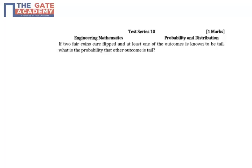At least one, note here, at least one is tail. What is the probability that the other outcome is tail? I mean, the other outcome here is both are tails.